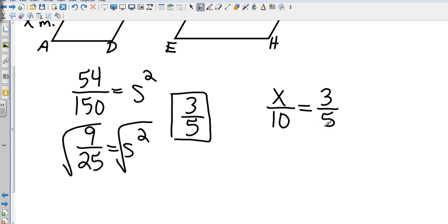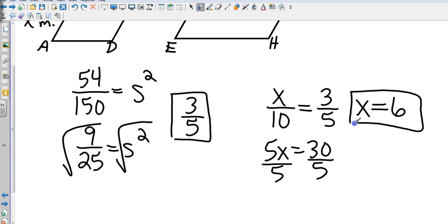Again, I'm going to cross-multiply. That gives me 5x equals 30, dividing both sides by 5, giving me a missing side of 6. And that's going to be 6 meters. Okay, so missing side is 6 meters, scale factor is 3 fifths.